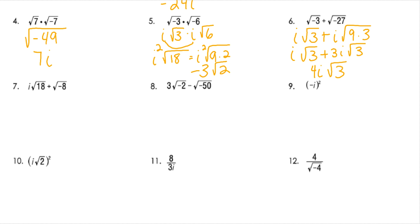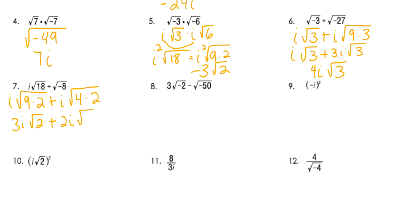Number 7 — again, we're adding, so let's simplify. I'm going to break this apart into 9 times 2. And I'm going to break the other apart into i times the root of 4 times 2, because 8 is 4 times 2. So that gives me 3i root 2 and 2i root 2. Now they're like terms because they have the same radical, so I would get 5i root 2.